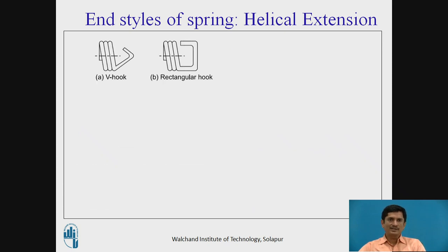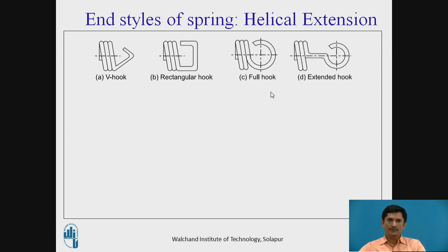For helical extension spring, we have different types of hook ends. One is VU, second the rectangular one, third is the full hook, and fourth is the extended hook.